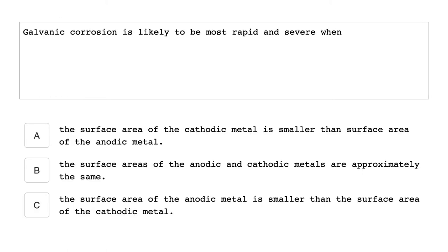Galvanic corrosion is likely to be the most rapid and severe when the surface area of the anodic metal is smaller than the surface area of the cathodic metal.